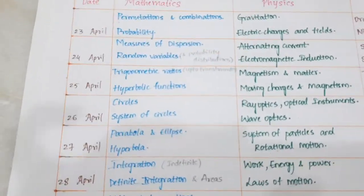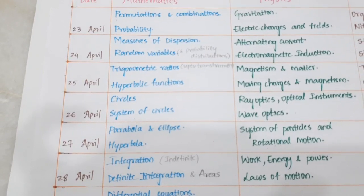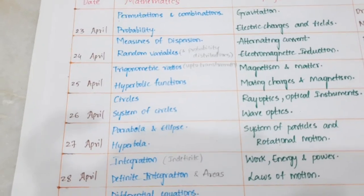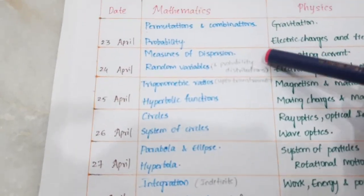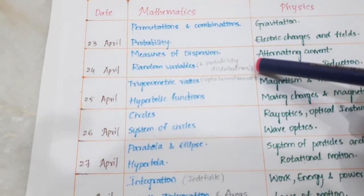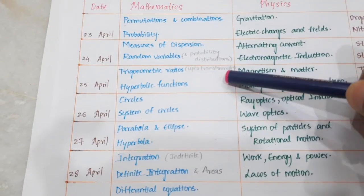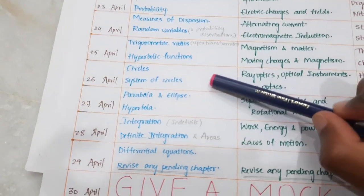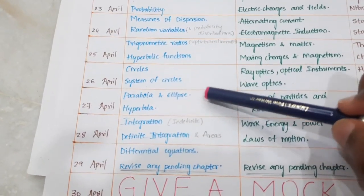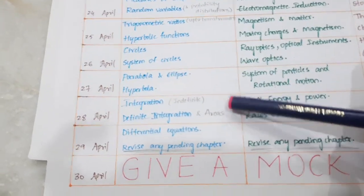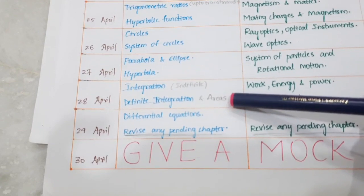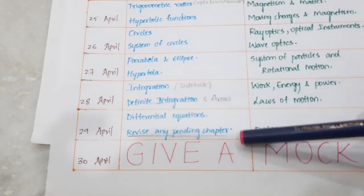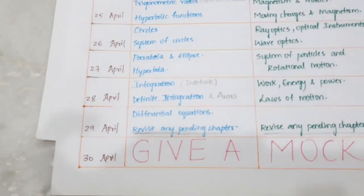We are going to cover all the chapters — the syllabus is available on the official website, and you can download it from the link in the description. On the 24th: Measures of Dispersion and Random Variables along with Probability Distributions. On the 25th: Trigonometric Ratios up to Transformations and Hyperbolic Functions. 26th: Circles and System of Circles. 27th: Parabola, Ellipse, Hyperbola. 28th: Integration and Definite Integration, including areas under curves. 29th April: Differential Equations and any pending chapter.